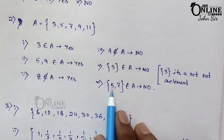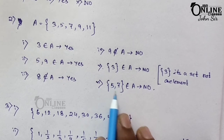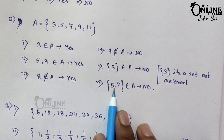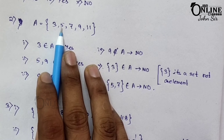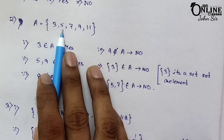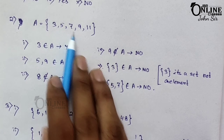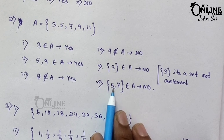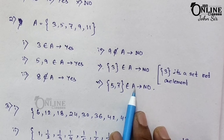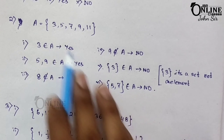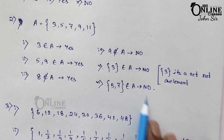Last one: {5, 7} — this is also a set. A set cannot belong to A in that sense. Here 5 and 7 are elements of A, but {5, 7} in curly brackets is a set, not an element. So it doesn't belong to A. The answer is a false statement.